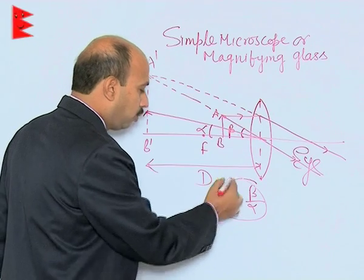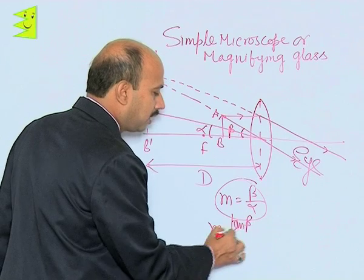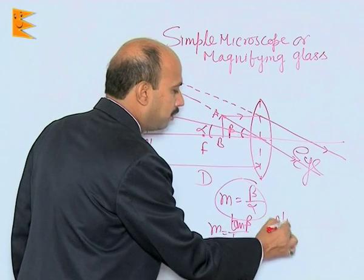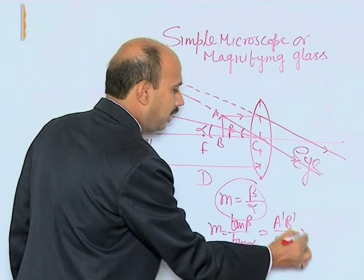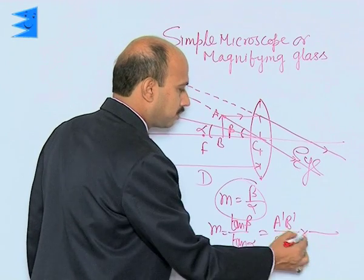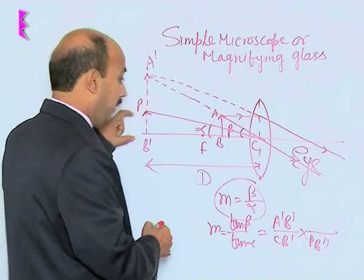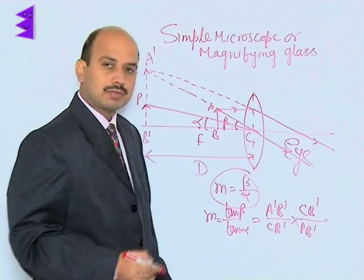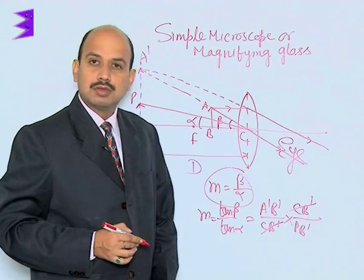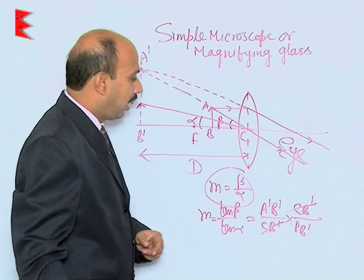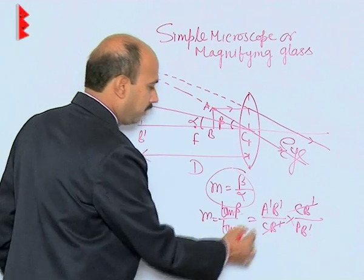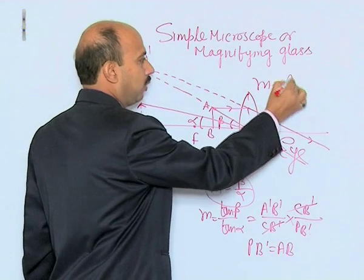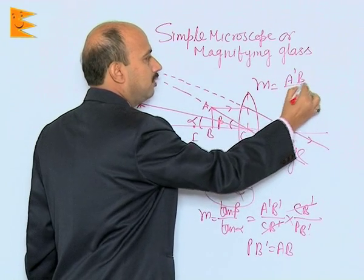For small angles we can write m = tan(beta) / tan(alpha). Tan(beta) can be written as A-dash B-dash upon CB-dash, and tan(alpha) can be written as PB-dash upon CB-dash. CB-dash cancels out, so we can write m = A-dash B upon PB-dash. But we know PB-dash is equal to AB, so here it can be written m = A-dash B upon AB, which is actually h-dash upon h, the height of the image to the height of the object.